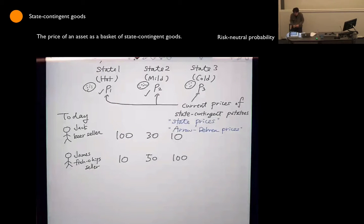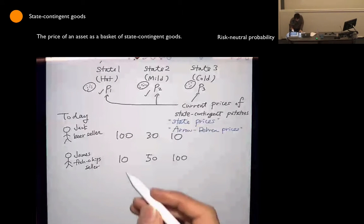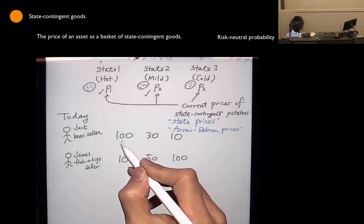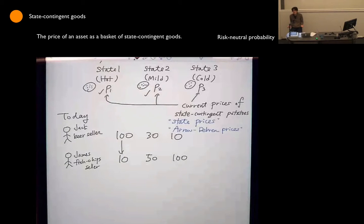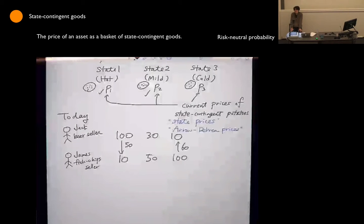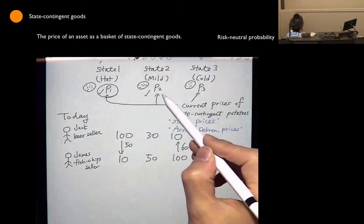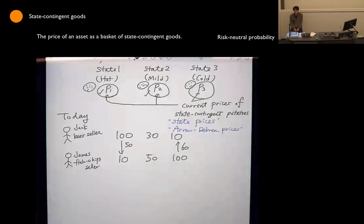As it is, it is a little risky. Having 100 potatoes in State 1 would be great if State 1 actually realizes, but ex ante — before knowing which state will realize — this is far from ideal. Now what they can do is trade. Jack says, 'Hi James, why don't we trade? I will give you 50 units of potatoes if State 1 realizes; you give me 60 potatoes if State 3 realizes.' And this exchange rate depends on the current prices of these future state-contingent goods.